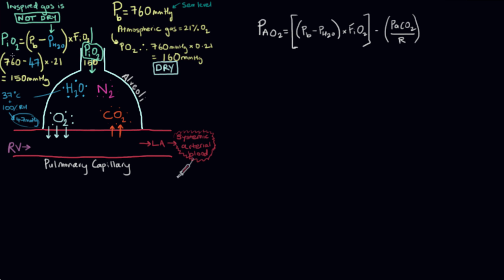So we have to subtract that from our barometric pressure before we multiply by our fraction of inspired oxygen. When we do that we get 150 millimeters of mercury. So that's the partial pressure of oxygen in the gas mixture that we're breathing into the alveola, warmed and humidified.